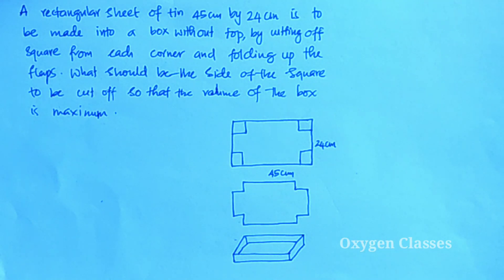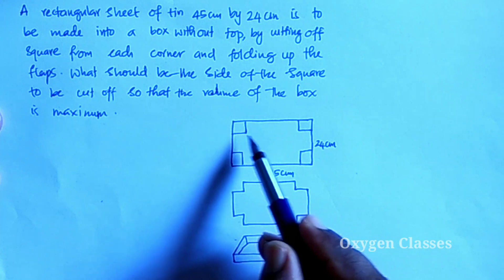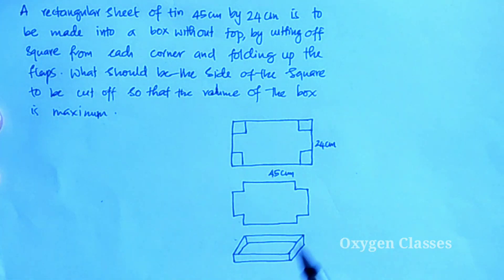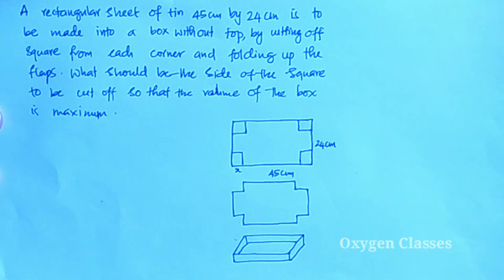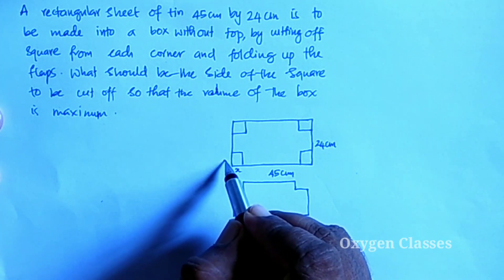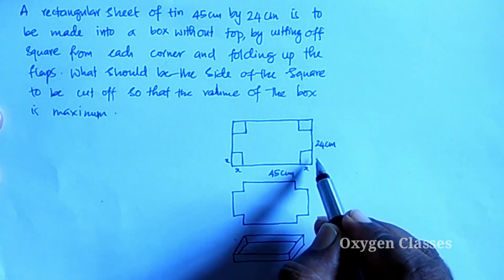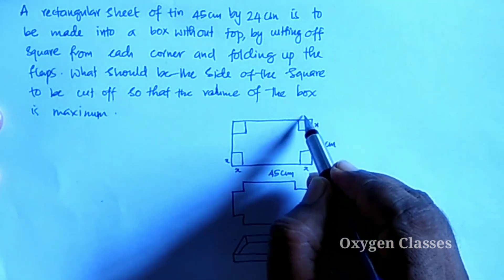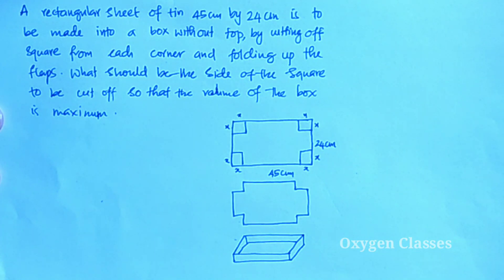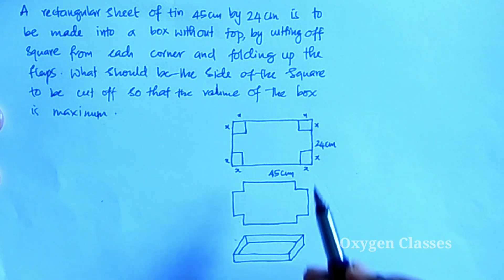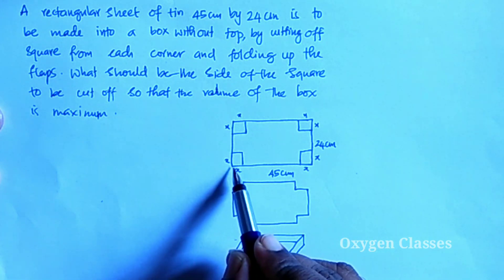We define the side of the square cut from each corner as x cm. So the cuts are x and x on each side.